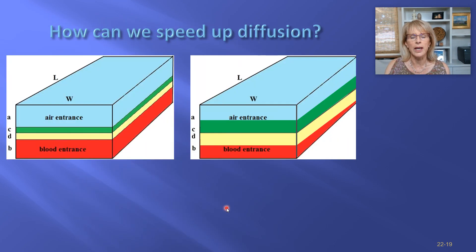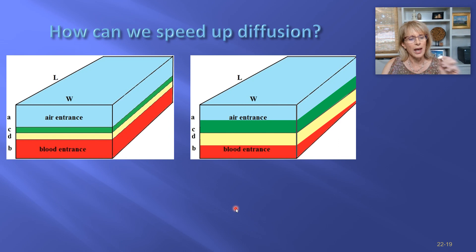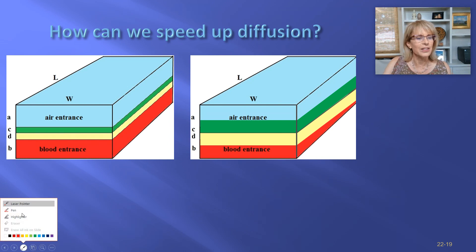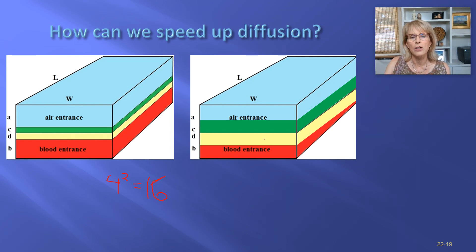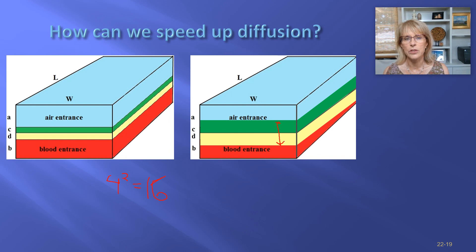Oxygen still needs to move by the principle of diffusion, but now it has to move four times as far or eight times as far. How does that influence how quickly it can move? Here is the distance between the air and the blood when you're healthy. If we make that distance four times as far, it is going to take much more than four times as long for things to diffuse. If it has to diffuse four times as far, it'll take four squared — 16 times as long to diffuse.